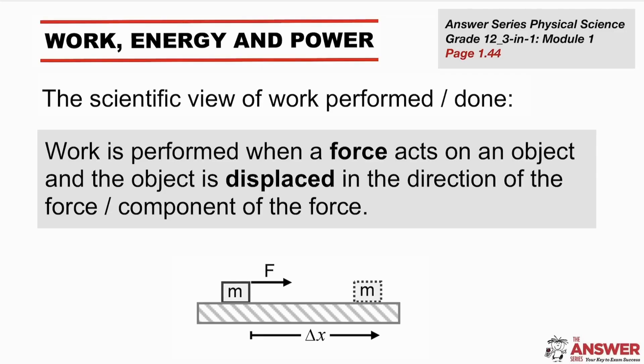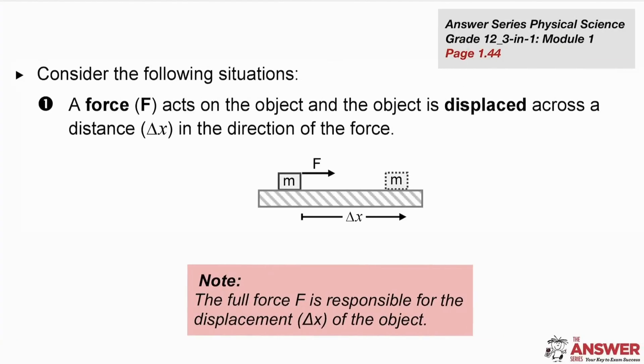If we have an object like say this one over here and there's a force acting on that object and that object moves a certain distance, i.e. it's displaced, then we say that work has been done. Now both force and delta x the displacement are vectors. So if the force vector and the delta x vector are in the same direction then we can say that that F is fully responsible for moving that object.